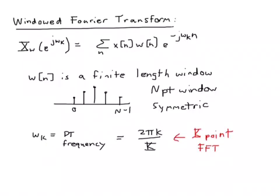So that's what we're doing with a windowed Fourier transform. We multiply the data by a window w of n, and then we calculate the Fourier transform as usual. We use a finite length window that's n points long, and if we're using an FFT to calculate it, we get frequency samples at 2 pi k over K, where little k is the index and big K is the size of the FFT.